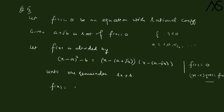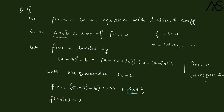By the division algorithm, f(x) = [(x - a)² - b] · q(x) + (rx + s). Now given that a + √b is a root of the equation, it satisfies f(a + √b) = 0. Substituting x = a + √b: the term (x-a)² - b becomes 0, so we are left with r(a + √b) + s = 0.